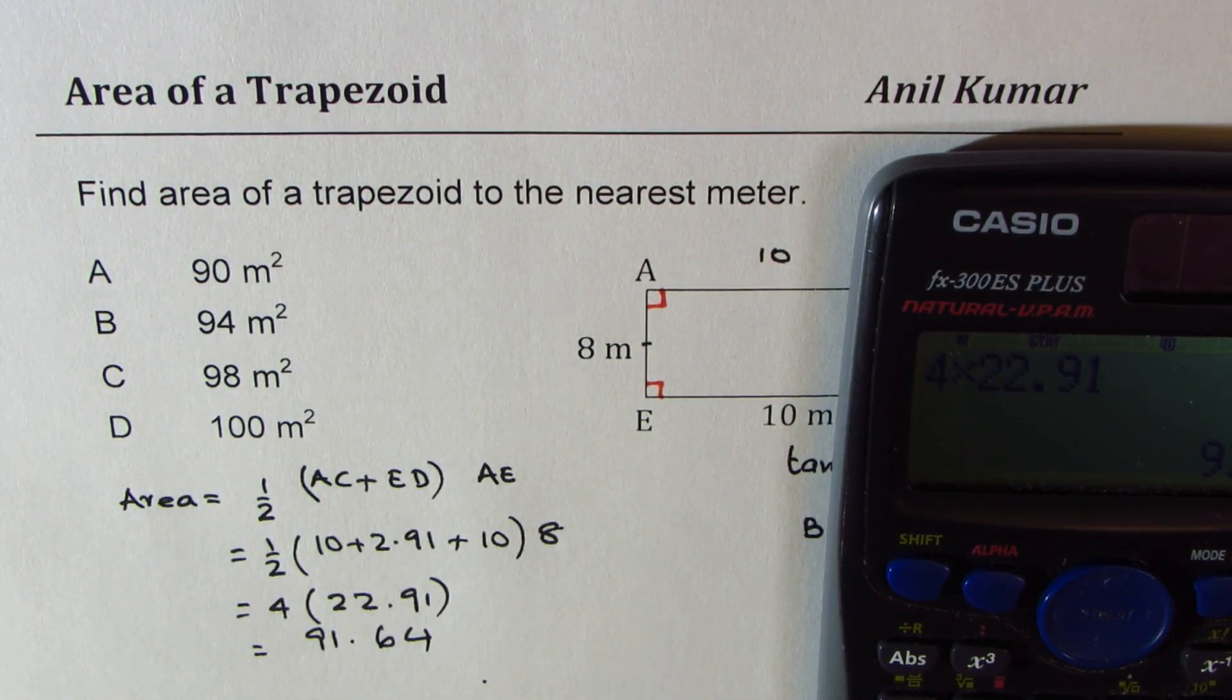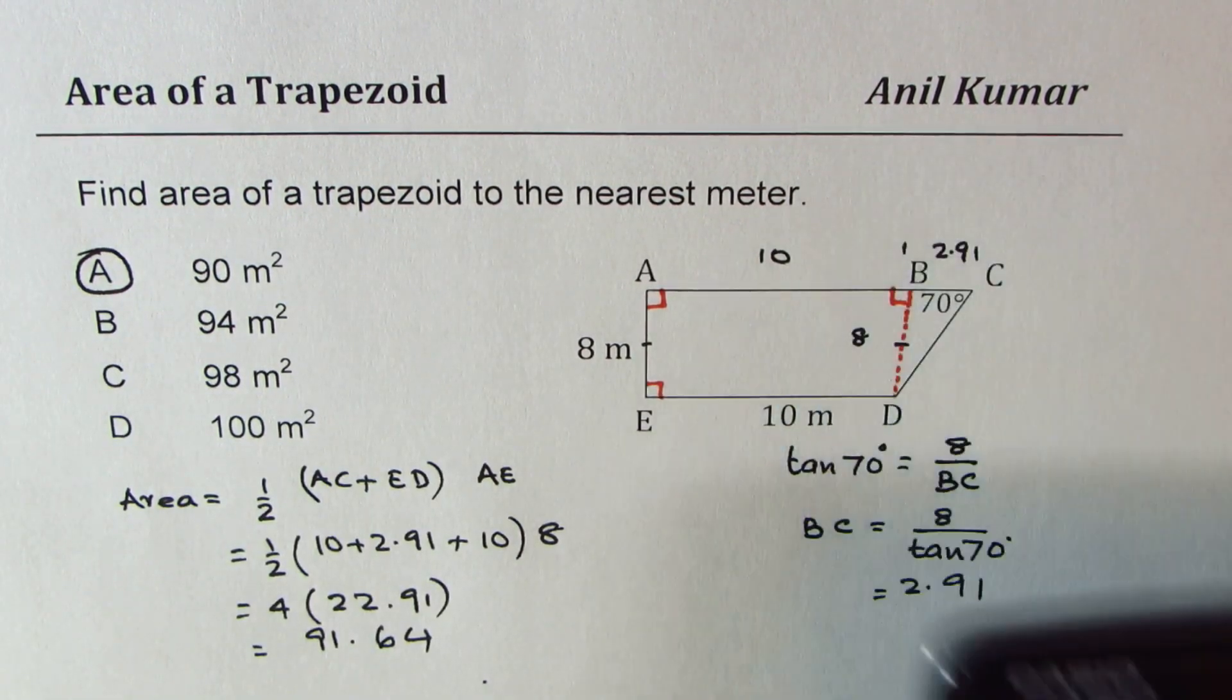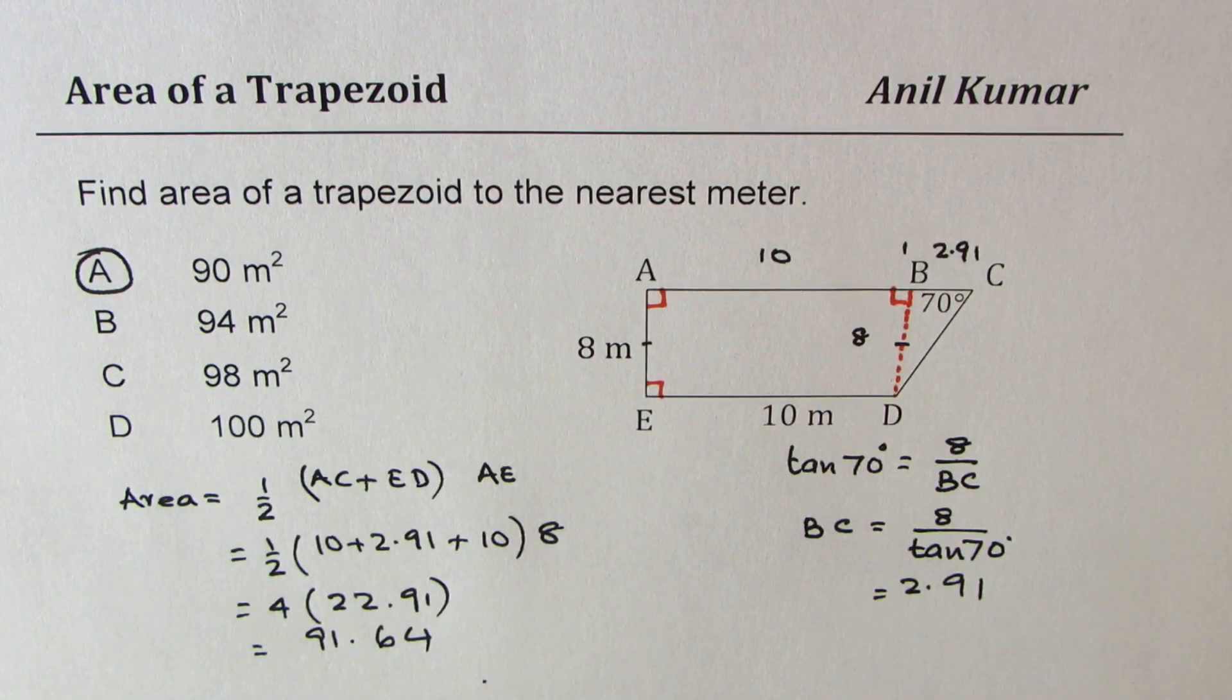So 91.64 is the area which is closest to 90 meters square. So that becomes the answer for our question.